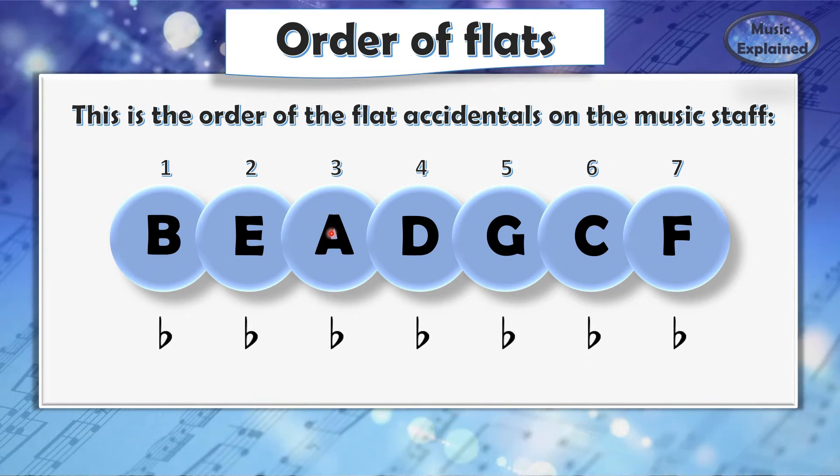This is the order of the flat accidentals on the music staff: B-flat, E-flat, A-flat, D-flat, G-flat, C-flat, and F-flat.